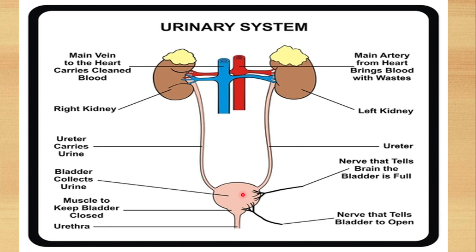The urinary bladder is a sac-like structure, and the ureters empty into the urinary bladder. The urinary bladder mainly helps in the storage of urine for some time — if your body needs to store urine temporarily, it will be held here in the urinary bladder.